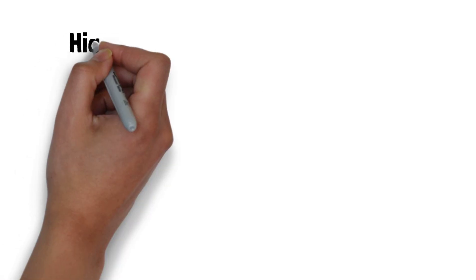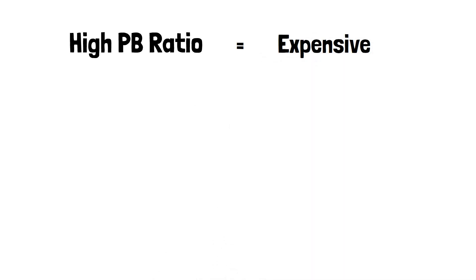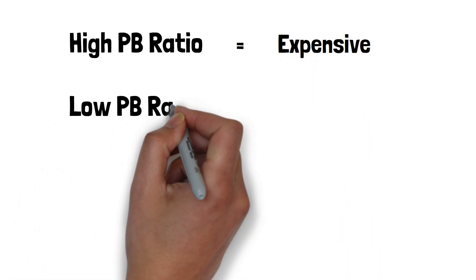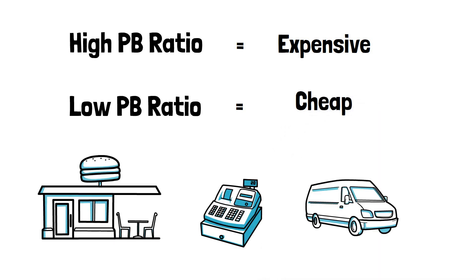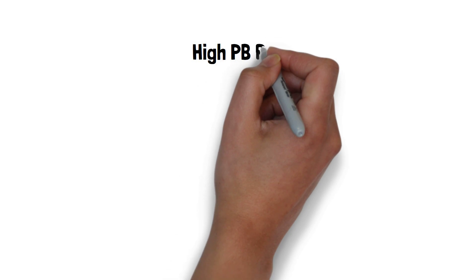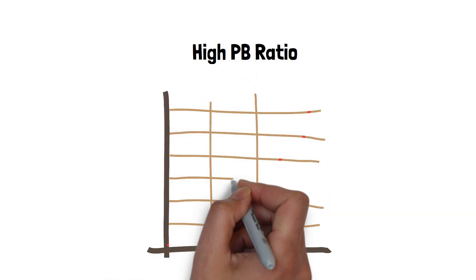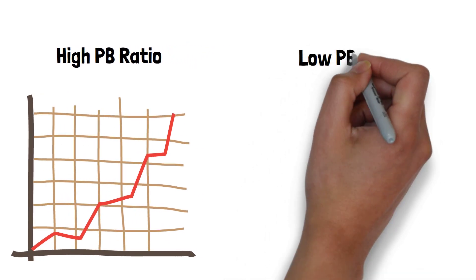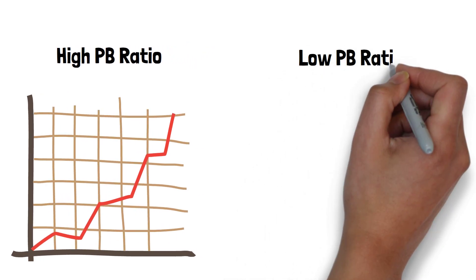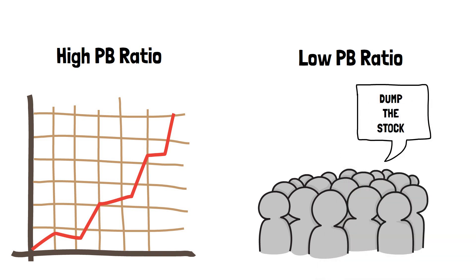A high PB ratio would indicate a company's stock is expensive, whereas a low PB ratio would indicate a company might be cheap when compared to the company's net assets. A company might trade at a high PB ratio when investors believe the company has a lot of growth potential. In contrast, a company might trade at a low PB ratio where investors aren't overly optimistic about the future performance.